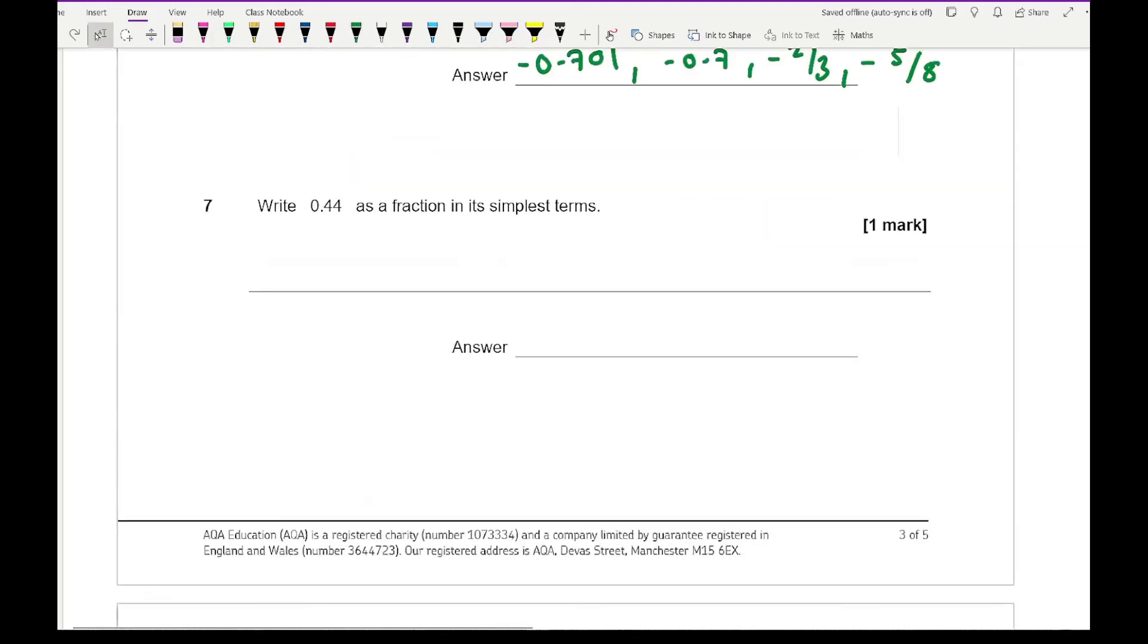Moving on to question 7, write 0.44 as a fraction in its simplest terms. How I teach this is write the number, we're ignoring the decimal point, so that's 44 over, we stick a 1 and write how many numbers after the decimal point. There's 2, so I write 2 zeros. That becomes 44 over 100. Then simplify: 22 over 50, so 11 over 25.